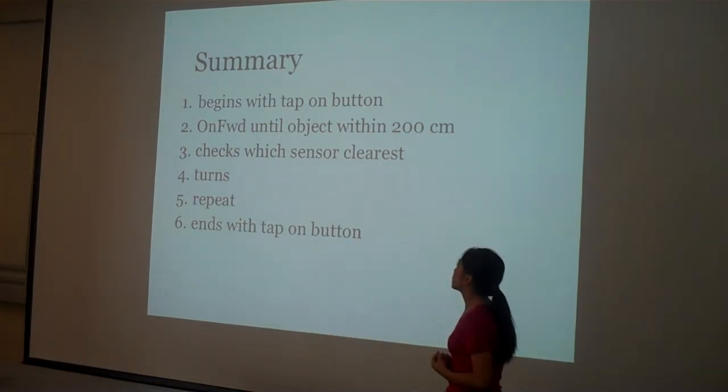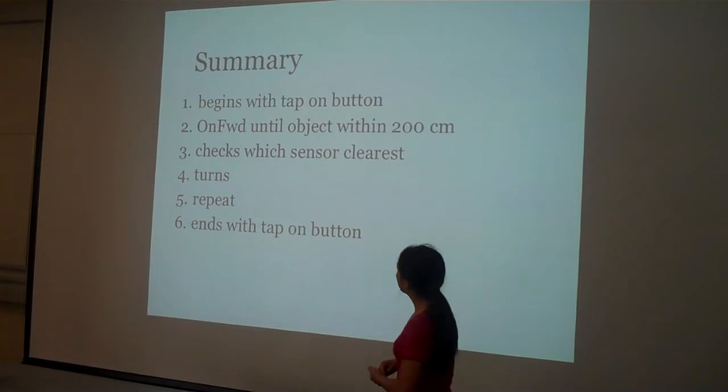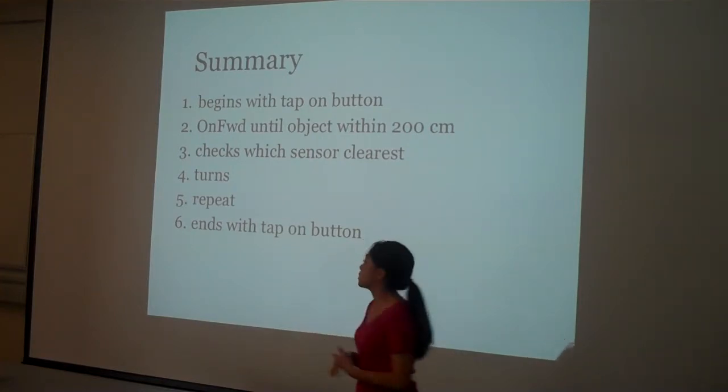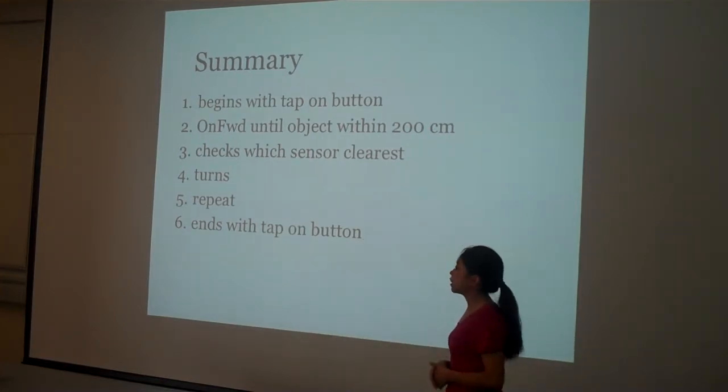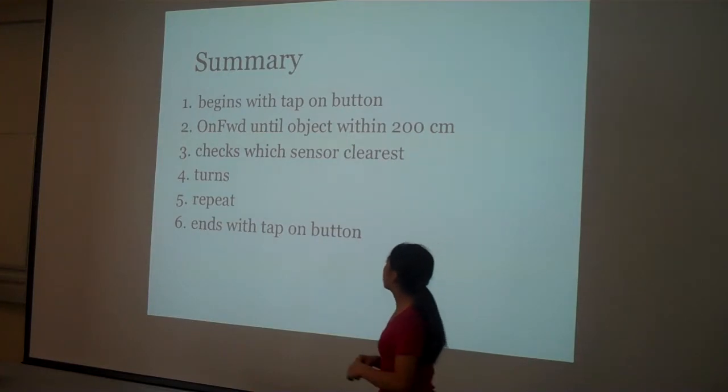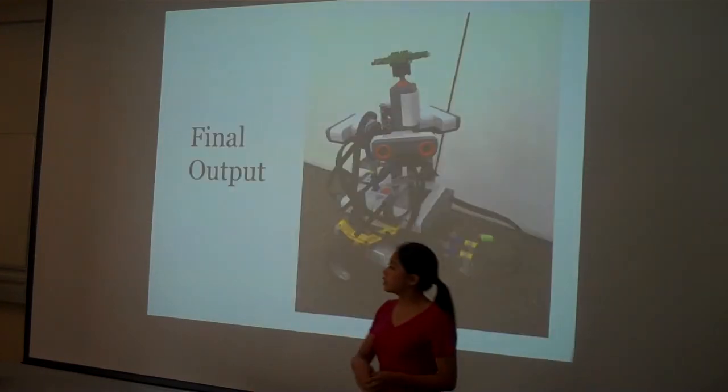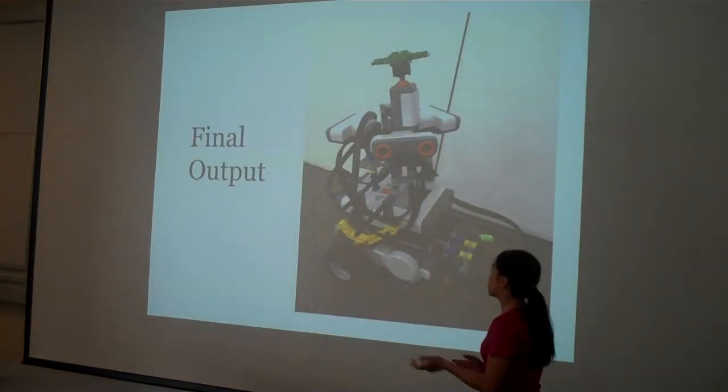So basically what happened was I would tap the top. It would go until it sees an object within 200 centimeters. I changed 90 to 200. And then it would check all the sensors. It would turn if it needed to. And then it would continue going.